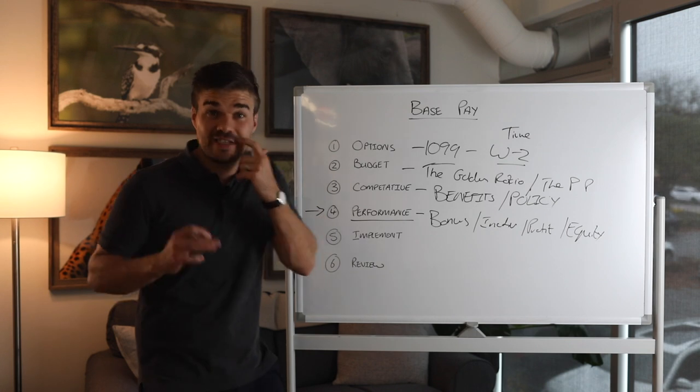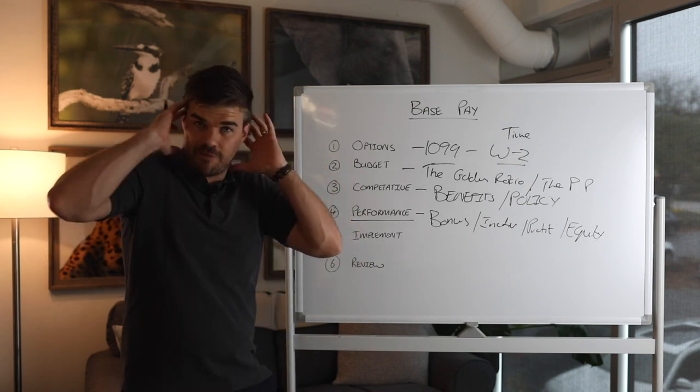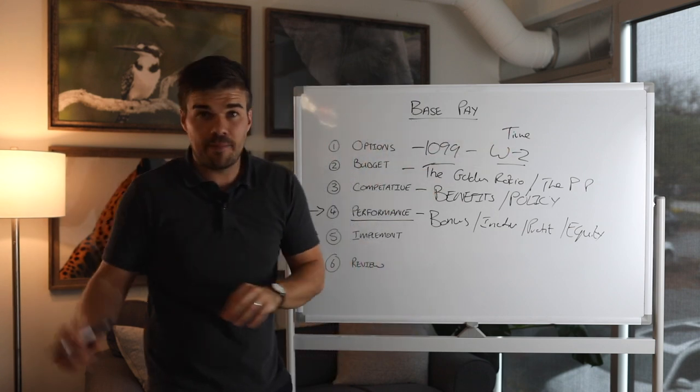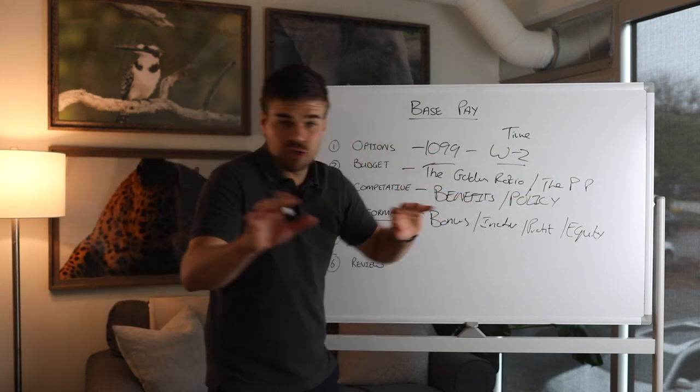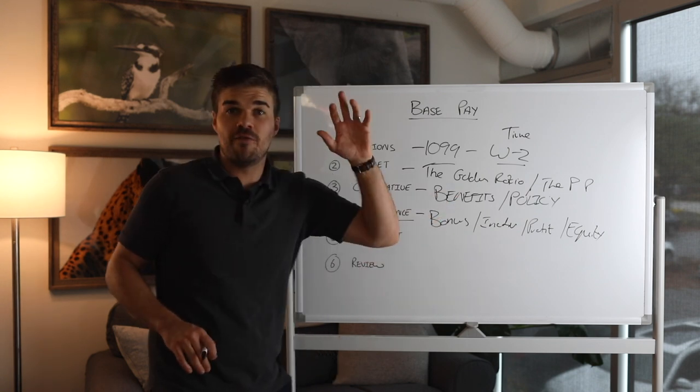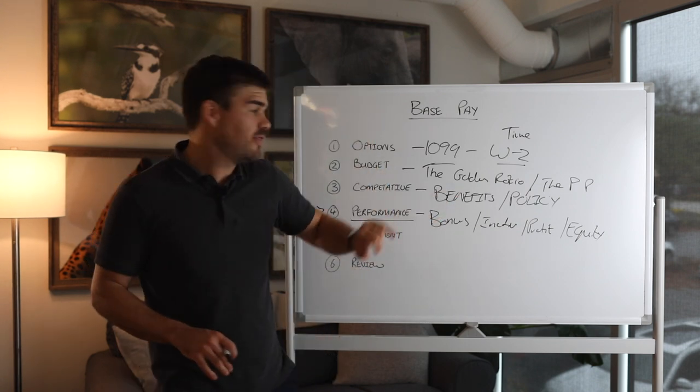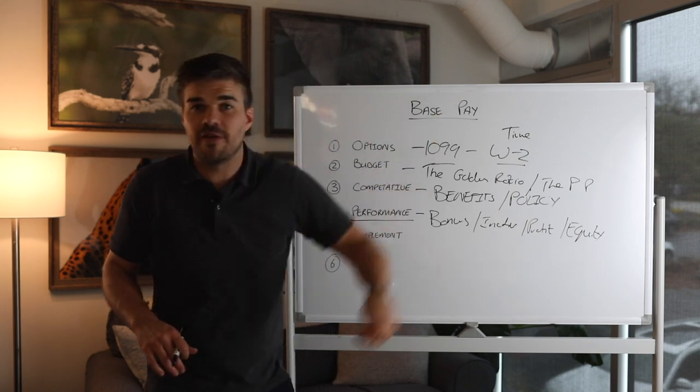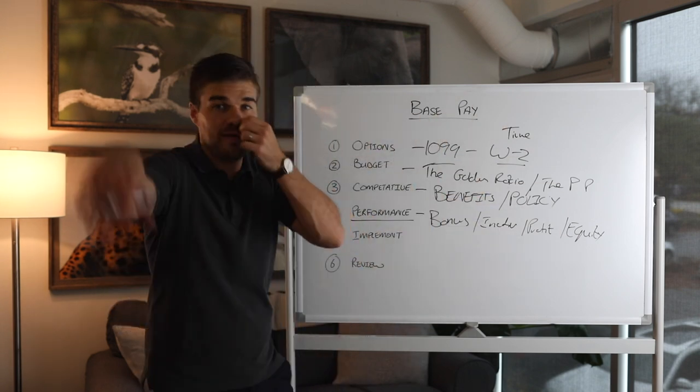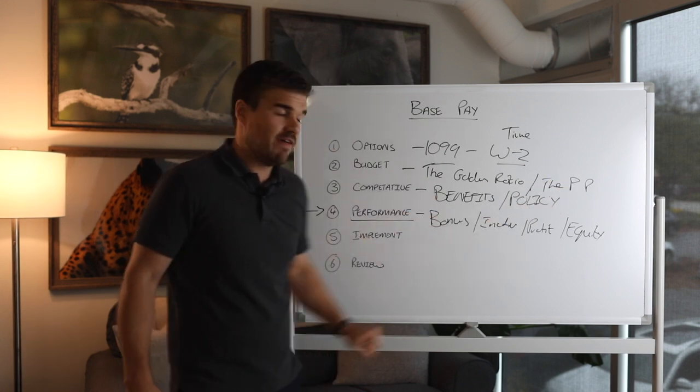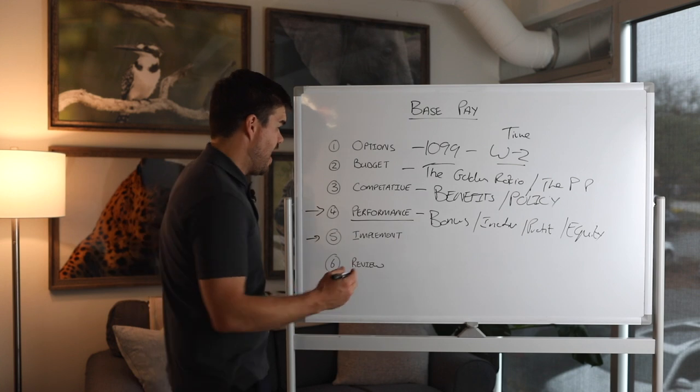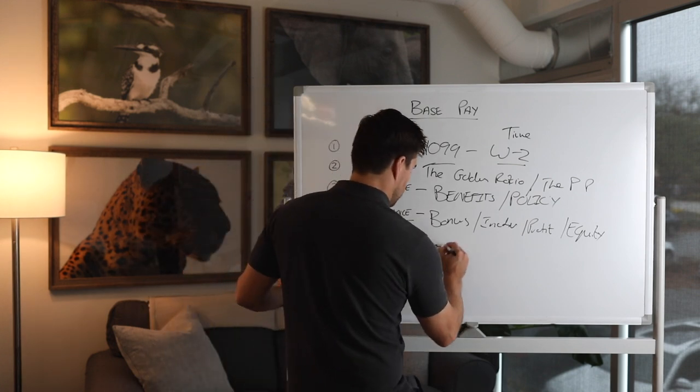Then we go down to implementation. Now we've decided, okay, we've watched the videos. We're very clear. W2, marketing manager, $5,000 a month. We know our budget. We have our certain policy. They work remote, whatever it is. Great. We have an incentive structure that if we generate more than 500 leads a month, they get a $1,000 bonus. If they get to 550 leads a month, they get $1,500 bonus. Whatever the incentive structure or bonus structure is, we've identified. Now we need to implement. Now we actually need to make this thing happen. And this is very contractual.